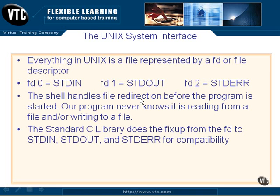All of these devices are represented by file descriptors. The first three of them we already know: FD0 is standard in, FD1 is standard out, and FD2 is standard error. The shell, when it creates our C program environment as the program starts, handles the redirection of file descriptors 0, 1, and 2 to do what we know as normal input — typically the keyboard — and normal output to the screen.